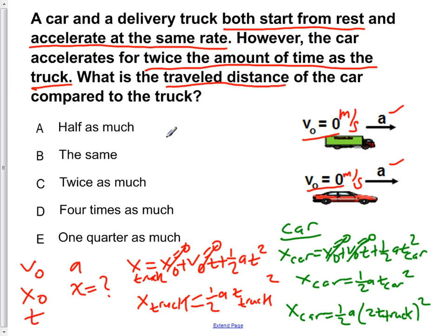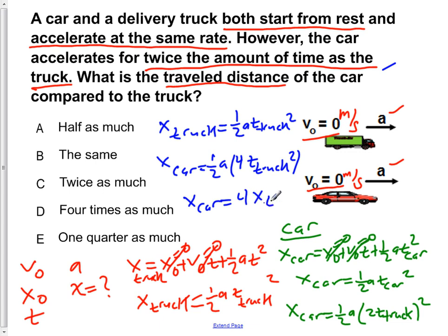If we now calculate all those out, we would see that the distance the truck goes is one-half A t truck squared. And x of the car is equal to one-half A times 4 t truck squared. Now, you see that the distance the car goes is four times the distance of the truck.